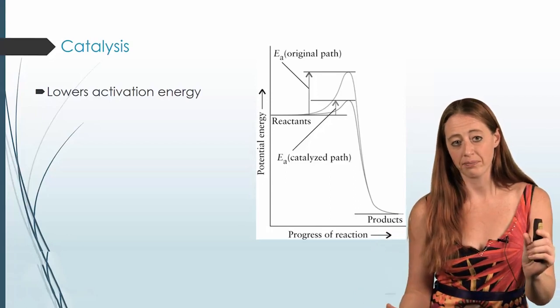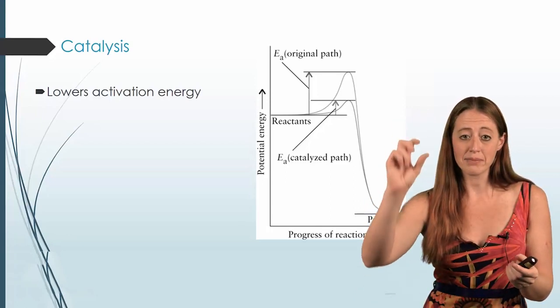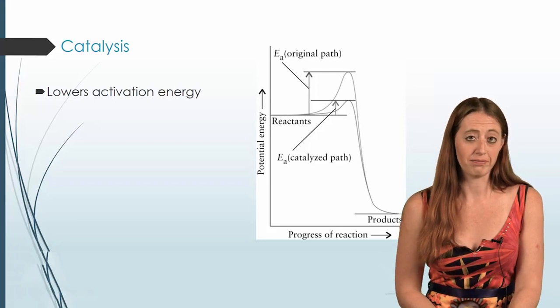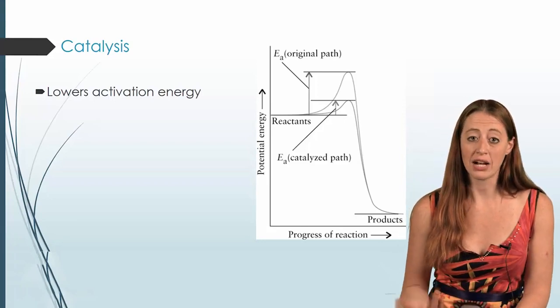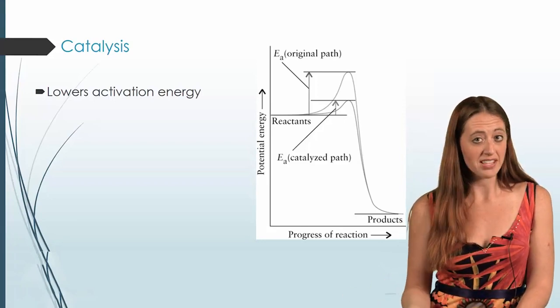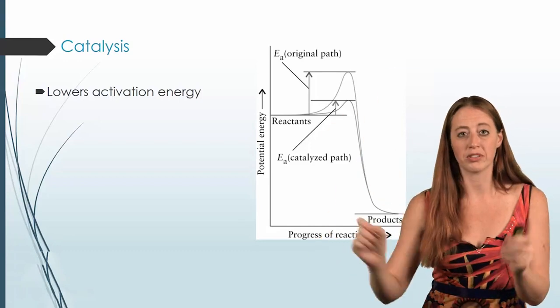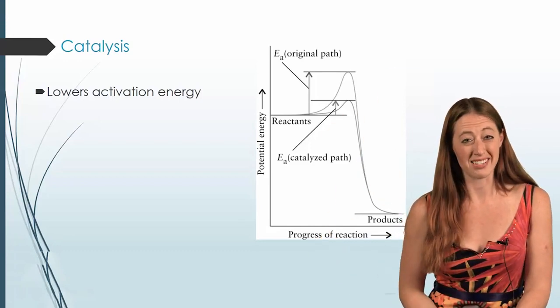What we do is we add in some species that lowers the activation energy for us, which allows the reaction to proceed faster. Because now it doesn't have to get up and over that energy barrier. It's not quite as high.